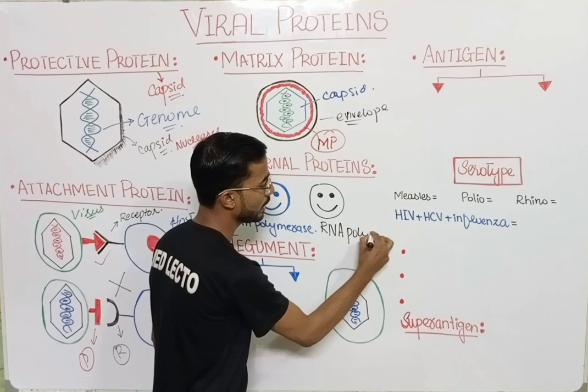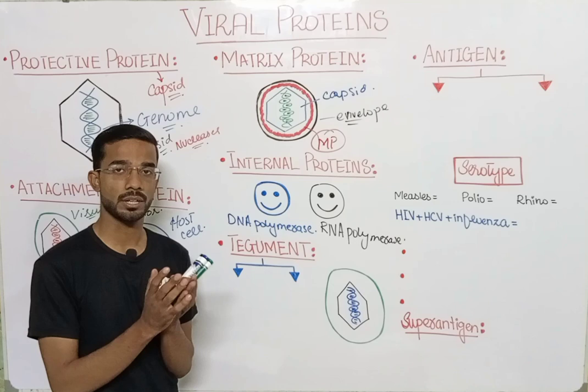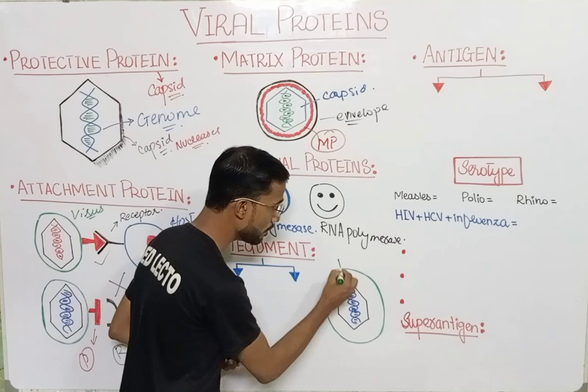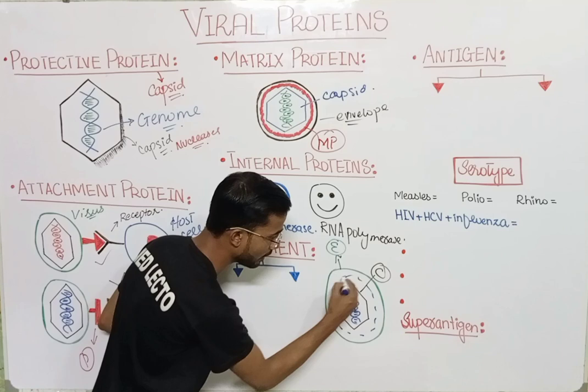Next is the tegument. The tegument is actually a structure that contains different regulatory proteins. These proteins are present between the envelope and the capsid of the virus, similar to the matrix protein.